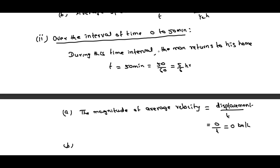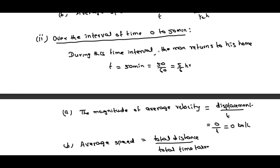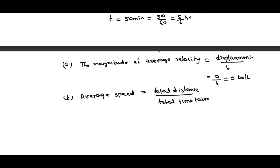Coming to average speed, average speed equals total distance divided by total time taken. For the forward motion the distance is 2.5 kilometers, and for backward motion it is also 2.5 kilometers. So total distance traveled is 2.5 plus 2.5 equals 5 kilometers. Time taken is 5/6 hour. Therefore average speed equals 5 divided by 5/6, which gives 6 kilometers per hour.